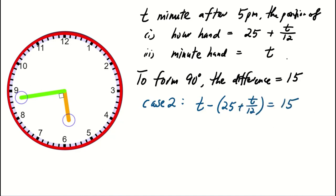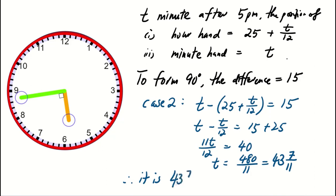This can be simplified as T = 43 and 7/11 minutes. This is when they form the second 90-degree angle after 5 PM.